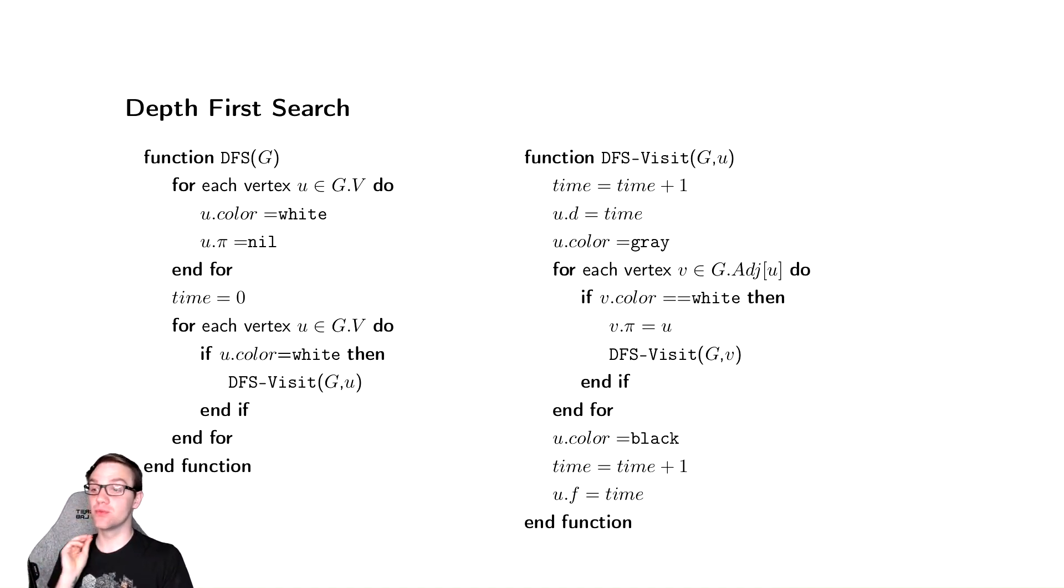We try to immediately start exploring a new vertex the second we find one that we have not visited yet. Once we finish visiting it, we color it black and then we update the finishing time. We'll deal with the time more when we do our example.